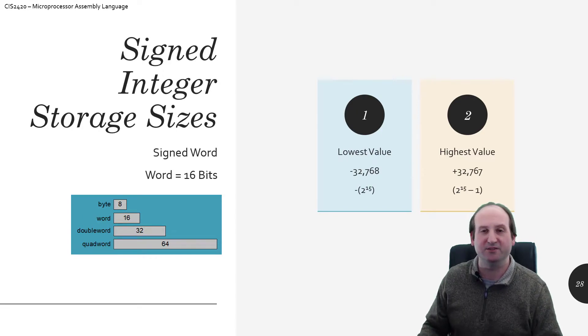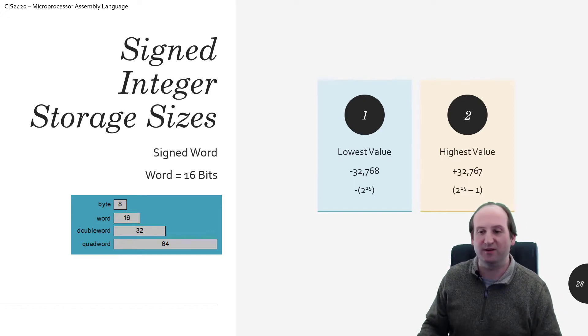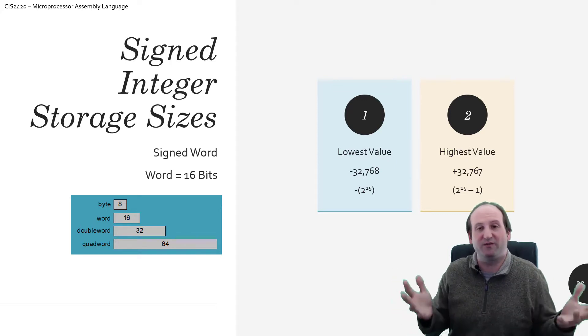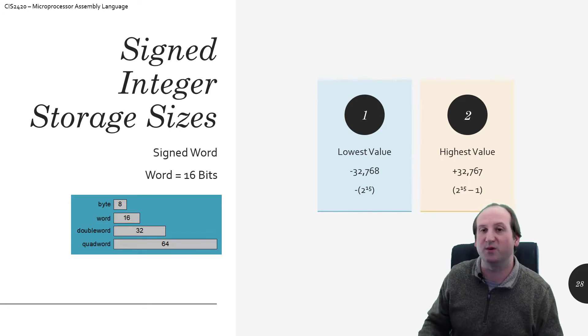Just like the unsigned integer storage size lecture, you'll start to see a pattern here. So looking at word sizes, so if we're dealing with signed words, 16 bits of storage, the number will start to grow, of course, because there's more switches, which means more possible combinations of numbers that can be stored.